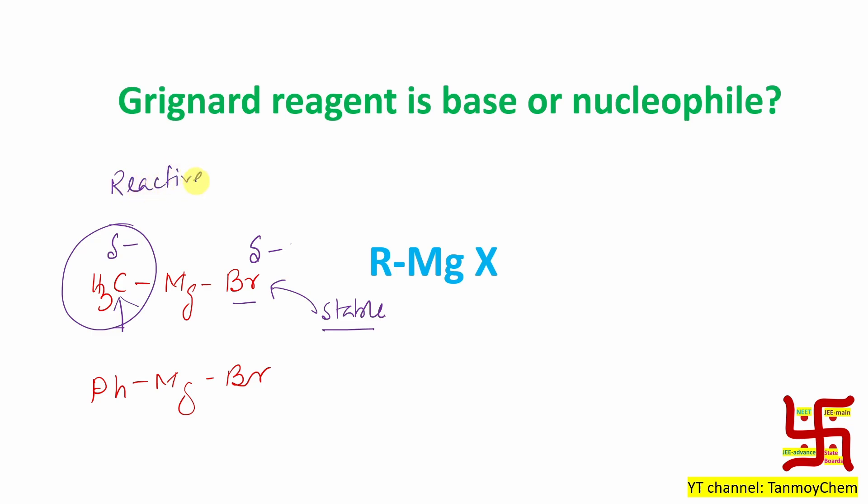And technically if I say it can act as base or nucleophile depending on the situation. Means if you give polar molecule like for example OH, SH, NH, etc., then this if you look at the electronegativity difference between oxygen and hydrogen significantly higher. So this is delta plus, this is delta minus. In that case, this Grignard reagent, this carbon reacts with this hydrogen and produces methane. Means alkane is produced. Similarly with thiol also.